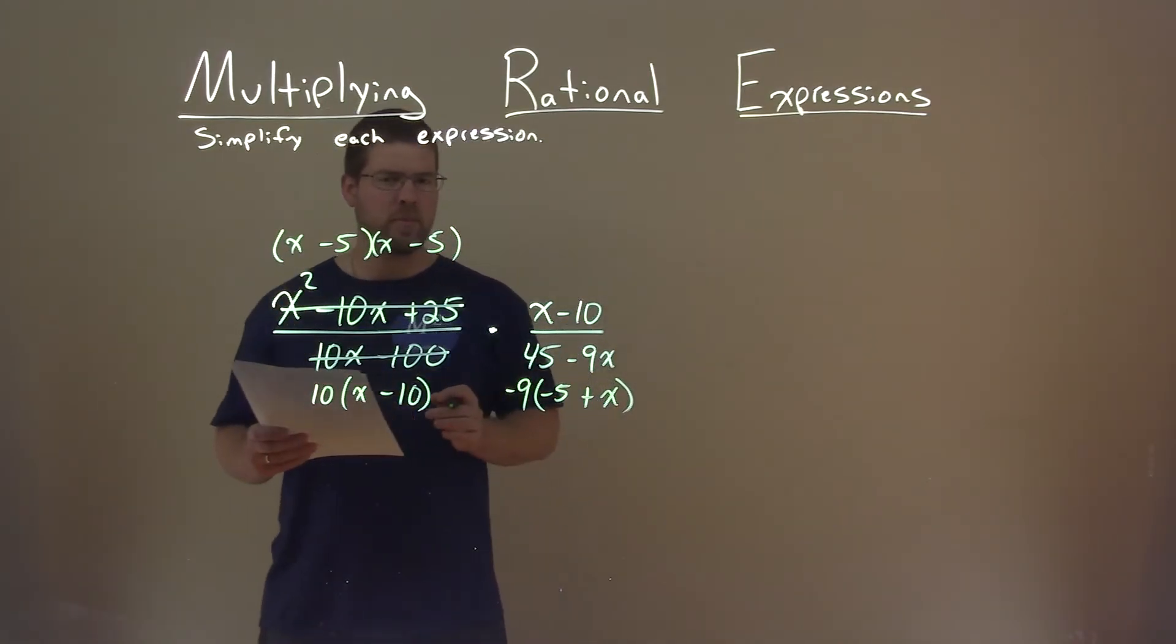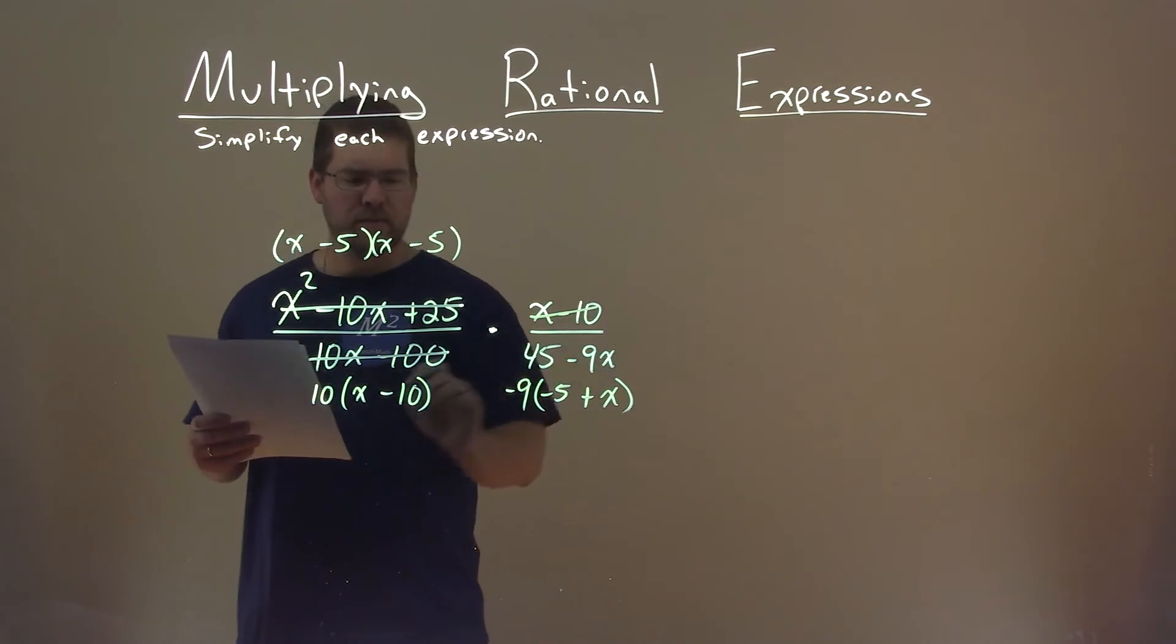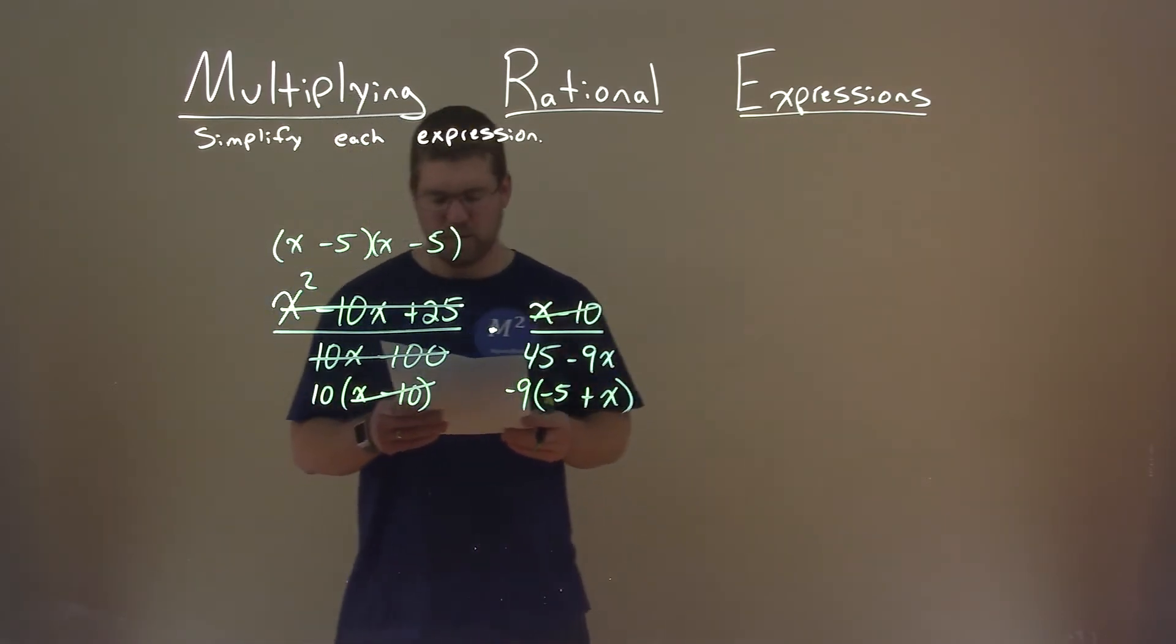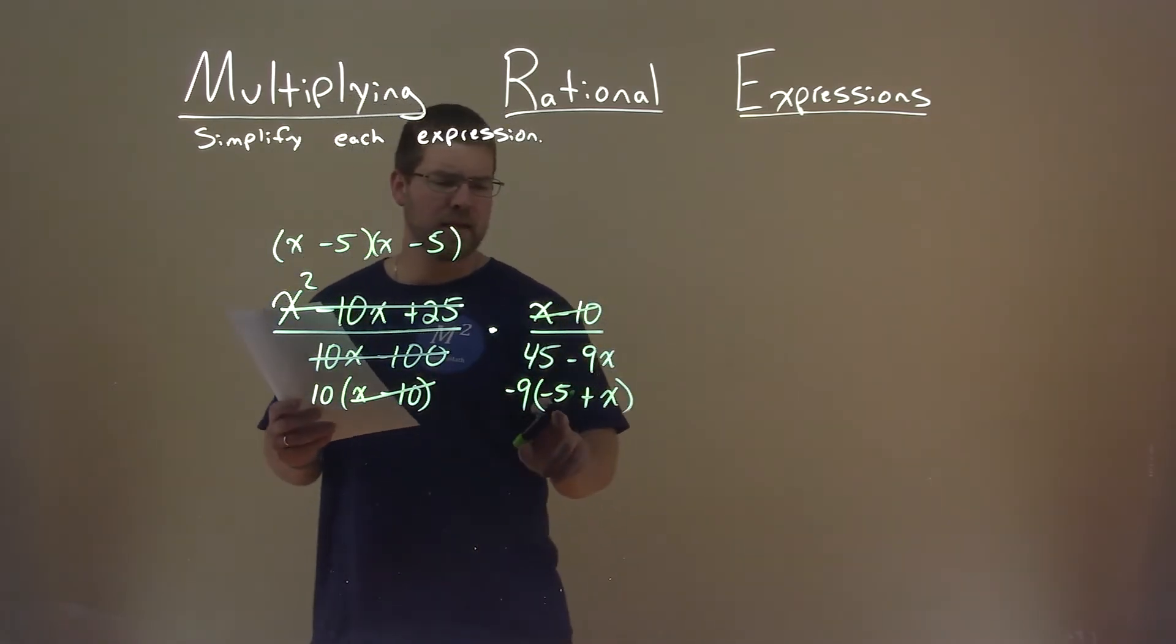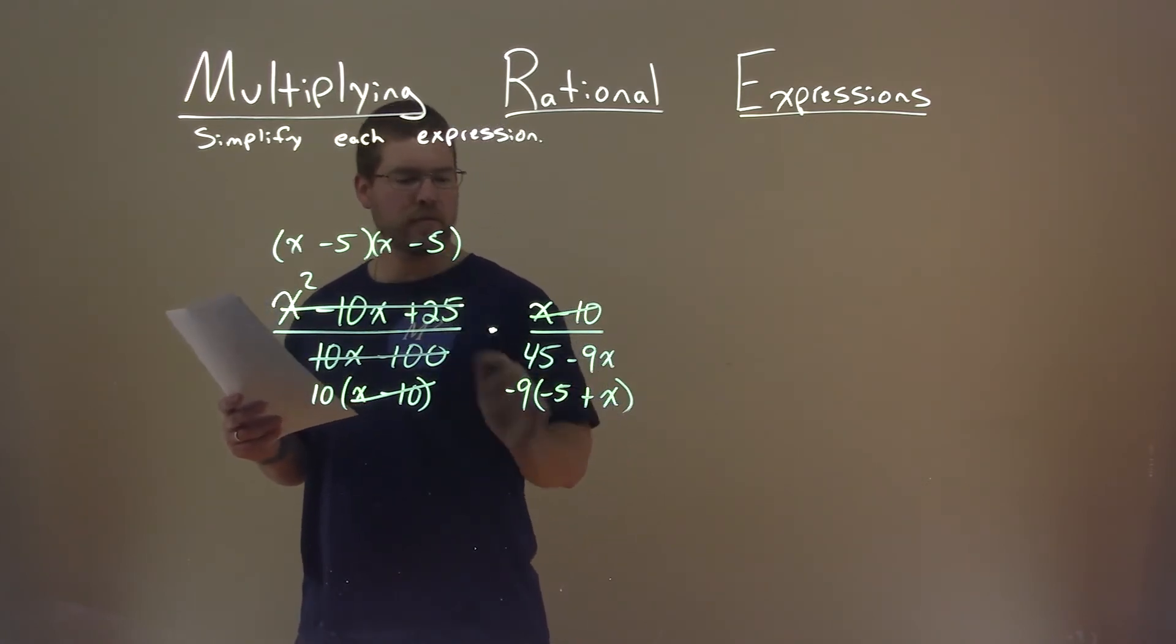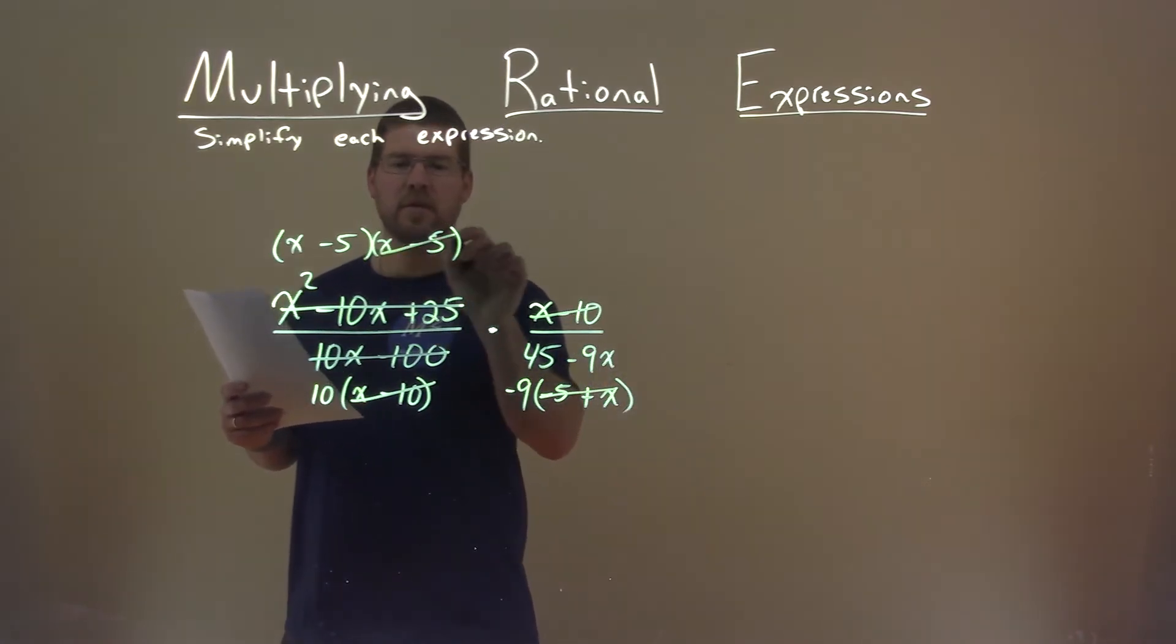We're now actually at a pretty good point. We see the x minus 10, x minus 10 right here. But notice the negative 5 plus x is the same thing as x minus 5. So these cancel as well.